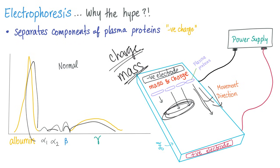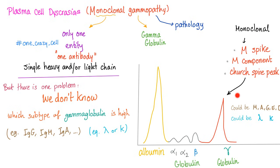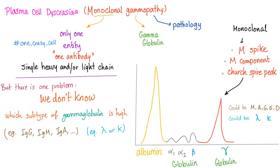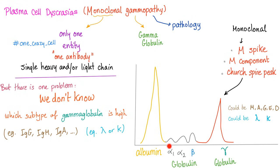That was the normal pattern. Now for the pathology: in monoclonal gammopathies, the gamma globulin portion will be elevated, producing a spike we call the M-spike, M-component, or M-protein. However, the spike alone cannot tell us whether it is due to increased IgG, IgM, IgA, IgE, or whether it's kappa or lambda. We only know that gamma globulins are elevated — electrophoresis cannot identify the subtype.